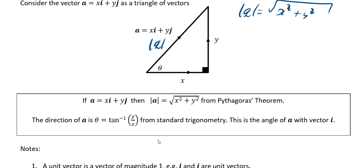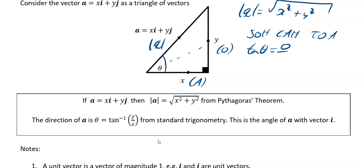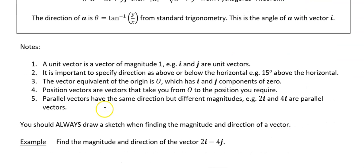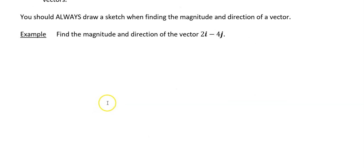If you want to define the direction relative to the angle theta, y is the opposite side and x is the adjacent. Using SOH-CAH-TOA, tan theta equals opposite over adjacent, so tan theta equals y over x, which means theta equals tan to the minus 1 of y over x. So your modulus of a is the square root of x squared plus y squared, and theta equals arctan(y/x).